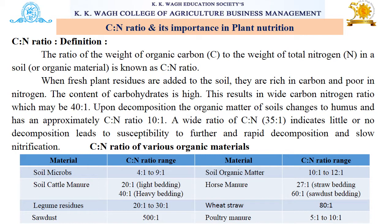After humus formation and properties, we move towards the CN ratio. The CN ratio is the ratio of the weight of organic carbon to the weight of total nitrogen in soil. When fresh plant residues are added to the soil, they are rich in carbon and poor in nitrogen, and the content of carbohydrates is high. This results in a wide carbon-to-nitrogen ratio, which may be 40:1. Upon decomposition, the organic matter changes to humus and has an approximate CN ratio of about 10:1.